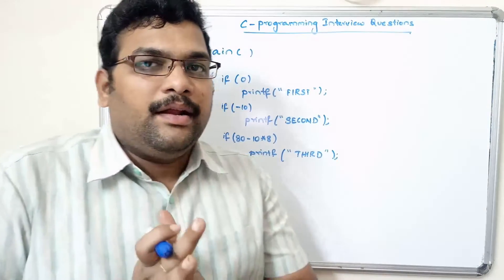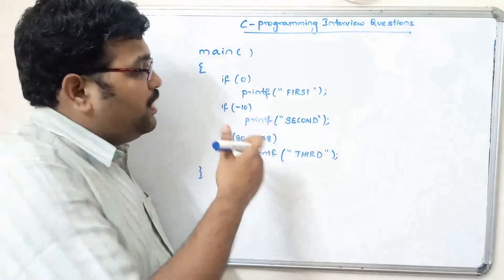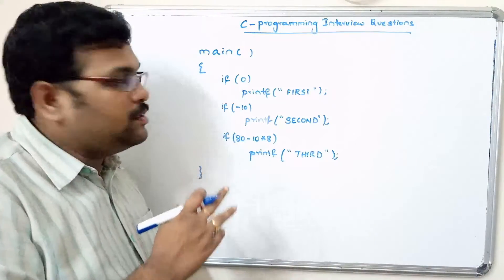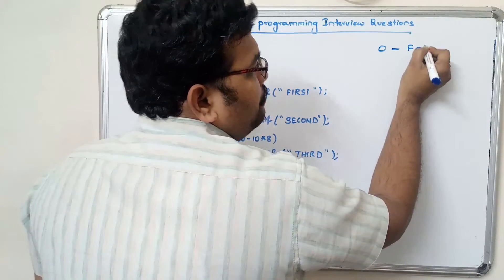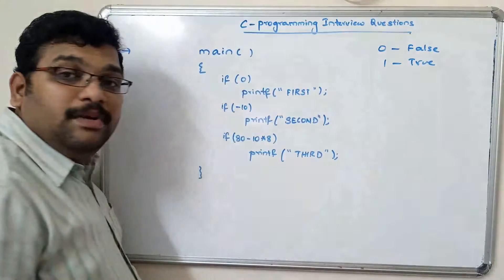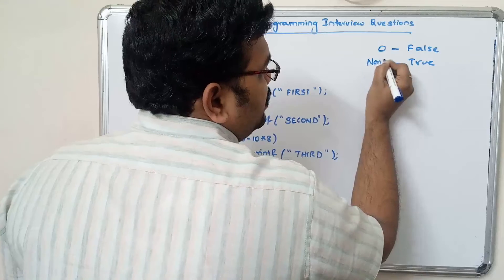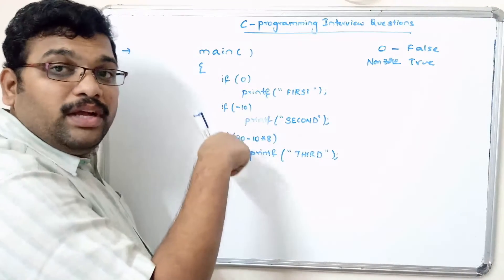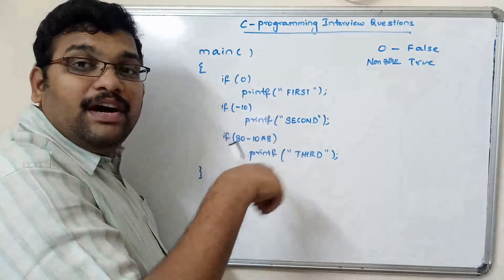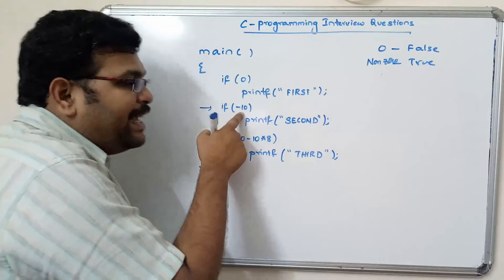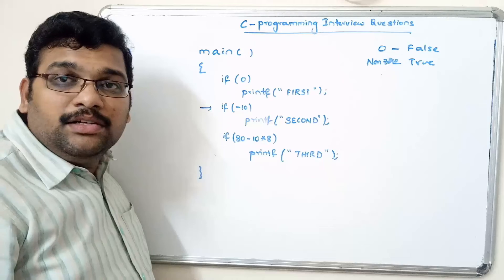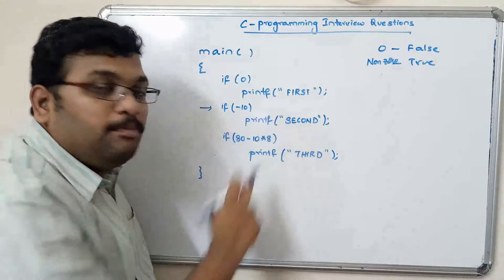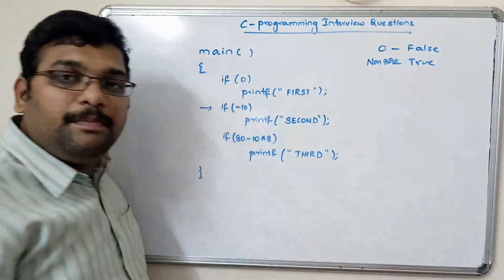Fourth question: there are three conditional statements, each with only one statement in the true block and no false block. We know that 0 is false and non-zero is true. First, if(0) is false — no false block is written, so it is skipped. Second, if(-10): even though it is a negative integer, it is non-zero, which means it is true. So the true block executes and 'second' is printed.